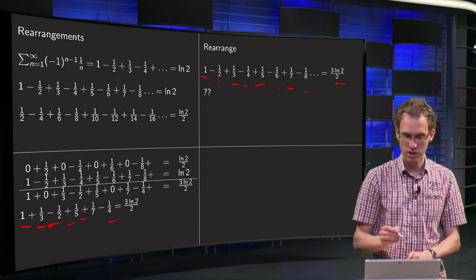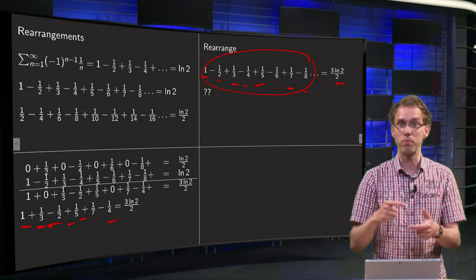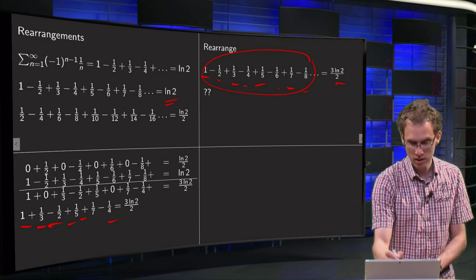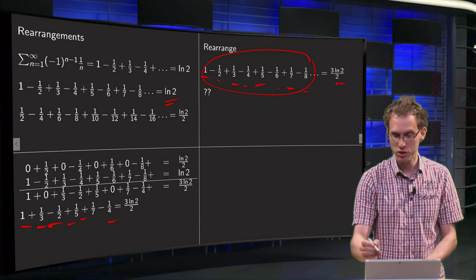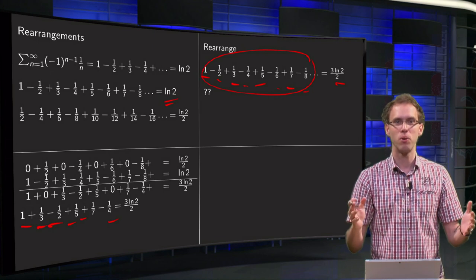Hey, but wait a minute. What we have over here is exactly 1 - 1/2 + 1/3 - 1/4. That should be equal to ln 2, and now it is equal to (3/2)ln 2. So what happened?